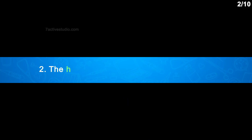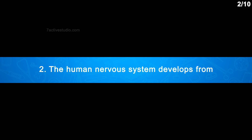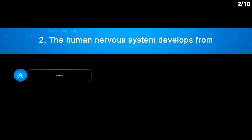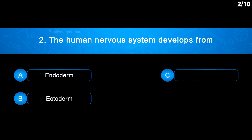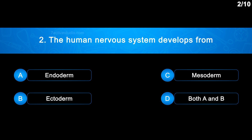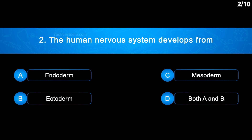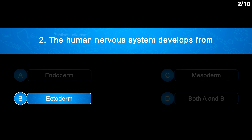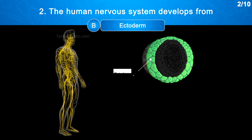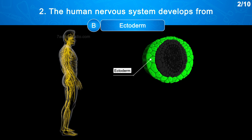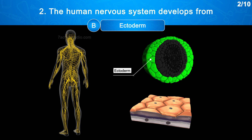Question No. 2: The human nervous system develops from — Option A: Endoderm; Option B: Ectoderm; Option C: Mesoderm; Option D: Both A and B. The correct answer is Option B: Ectoderm. Ectoderm is the source of most nerve tissue and some epithelial tissues.